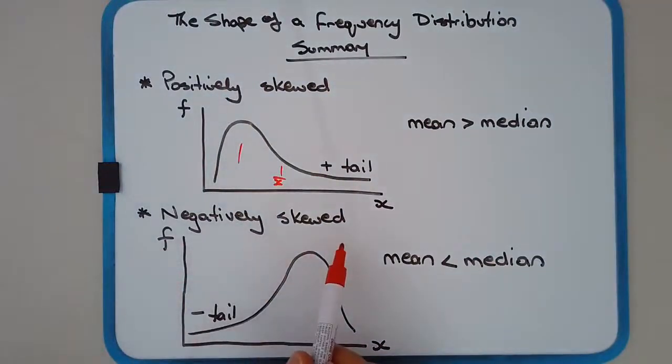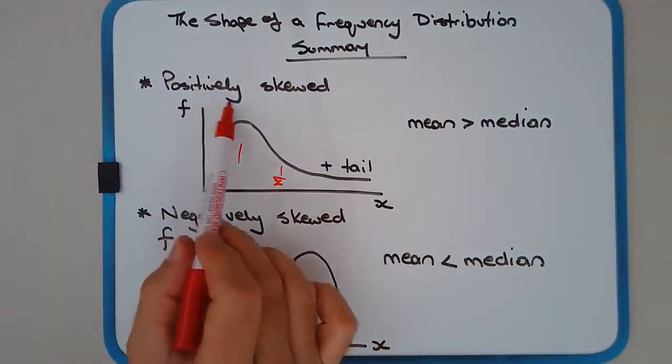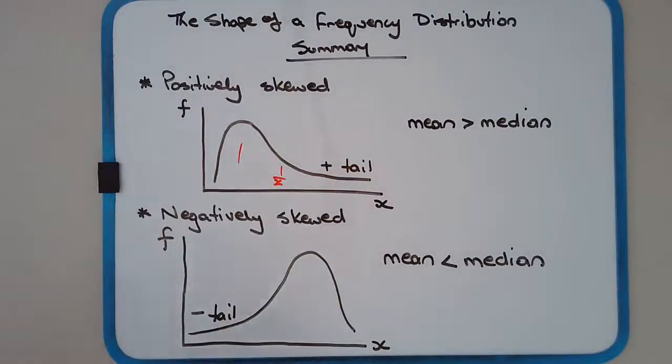Next, we have negatively skewed. This is basically the same thing as positively skewed, except flipped the other way around. So you have the bulk of the data, it's to the right-hand side, so toward the positive side. But there's a few low scores that form a tail. So it really depends on where the tail is. So the tail's on the negative side, so we call it negatively skewed.